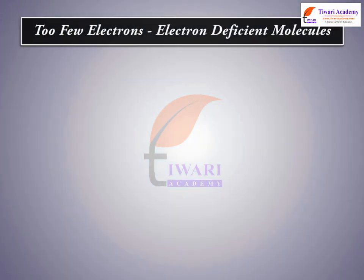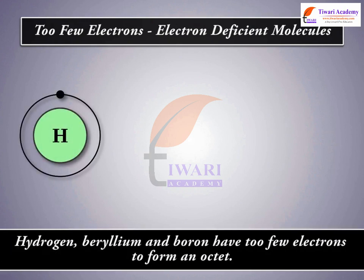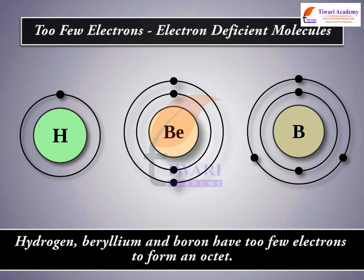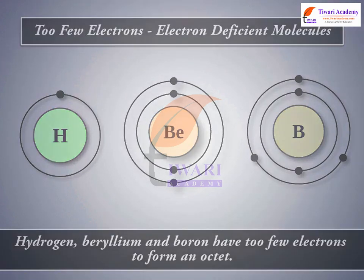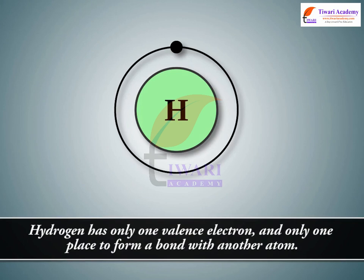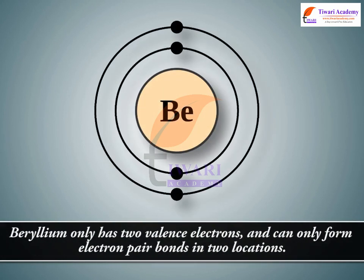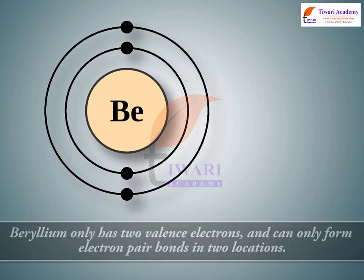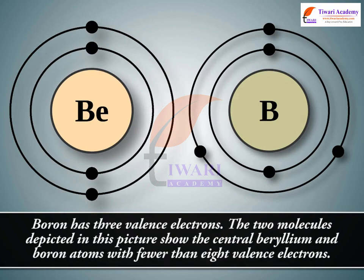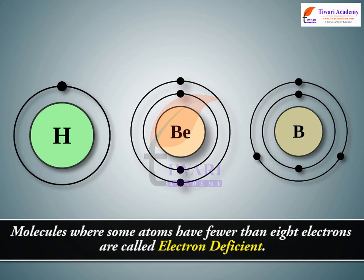Too few electrons — electron-deficient molecules. Hydrogen, Beryllium, and Boron have too few electrons to form an Octet. Hydrogen has only one valence electron and only one place to form a bond with another atom. Beryllium only has two valence electrons and can only form electron-pair bonds in two locations. Boron has three valence electrons. The two molecules depicted in this picture show the central beryllium and boron atoms with fewer than 8 valence electrons. Molecules where some atoms have fewer than 8 electrons are called electron-deficient.